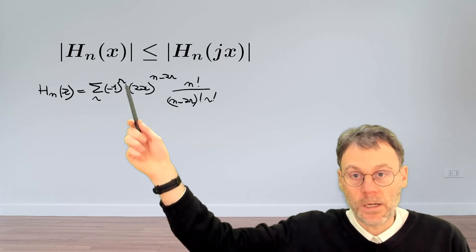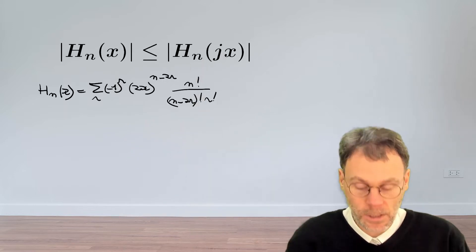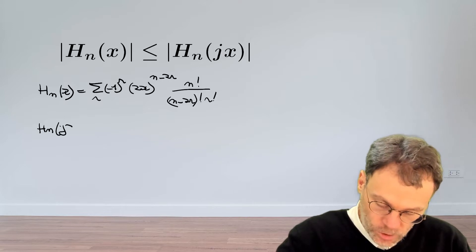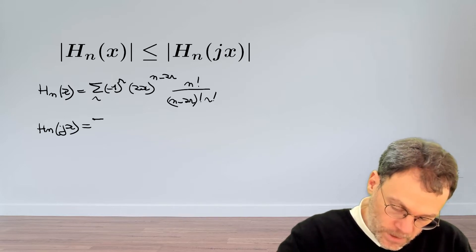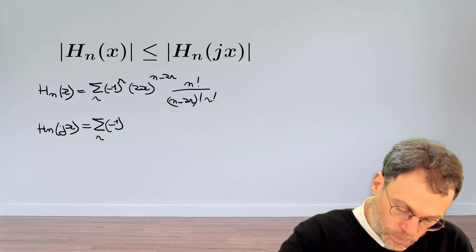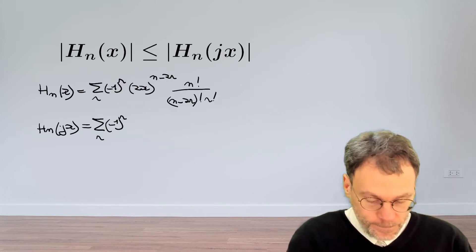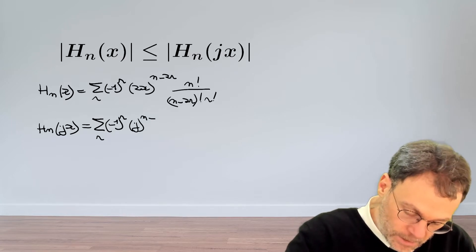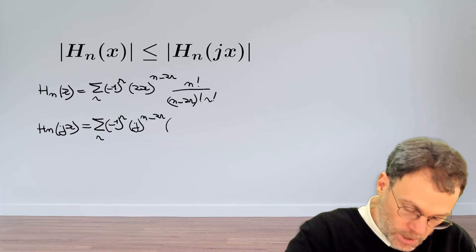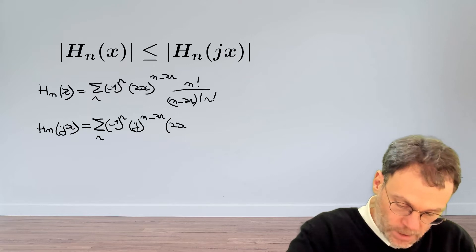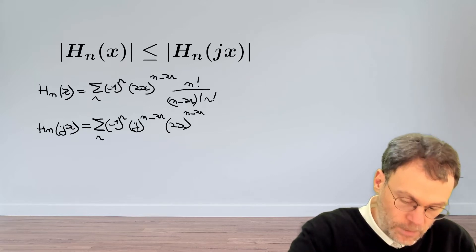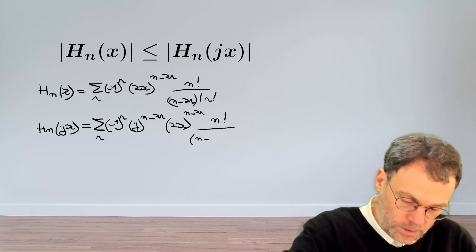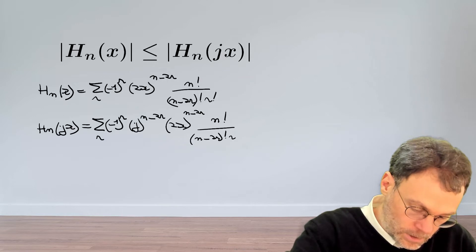Okay, that's for the left-hand side. For the right-hand side here, we just substitute jx in there, so Hn(jx) will be very similar, just a sum over r, minus 1 to the power of r. And then this j will be raised to the power of n minus 2r, and we still have 2x raised to that same power, n minus 2r, and then our friends the factorials, n minus 2r and r.